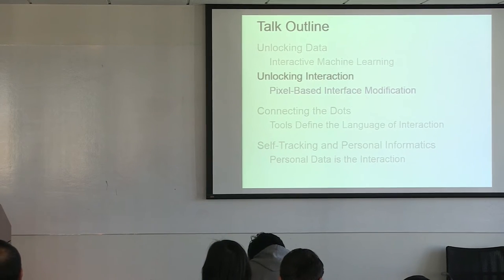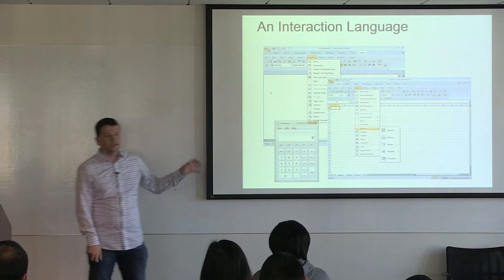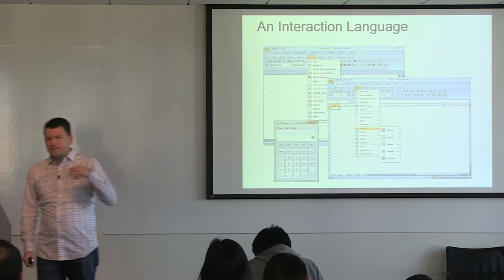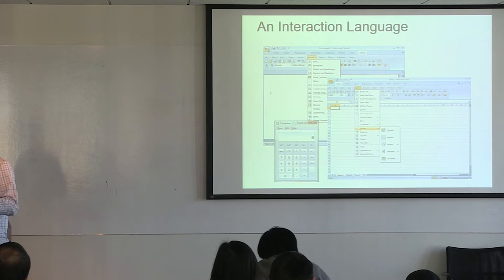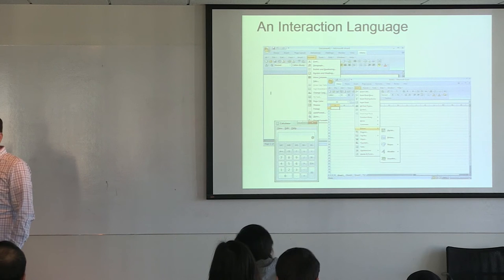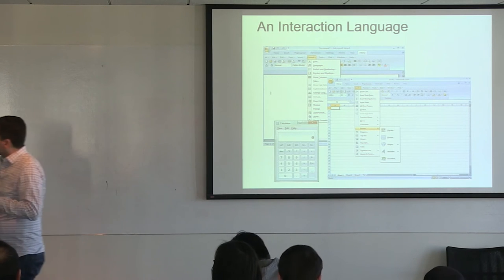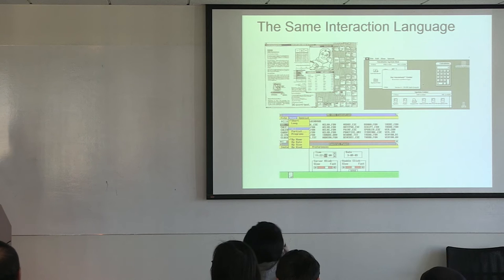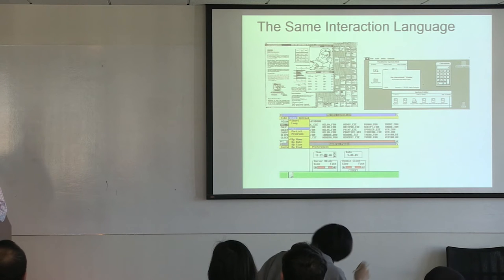Now I'm going to make a jump to pixel-based interface modification and promise to connect the dots later. Our existing interaction language is a tree defined by the containment of widgets inside other widgets, where everything is a rectangle for weird historical reasons. I'll further claim that across different applications it's all the same parts on the same tree with the same rectangles — perhaps a slightly different dialect of the same language. This is a very mature language; we've had it for 40 years.